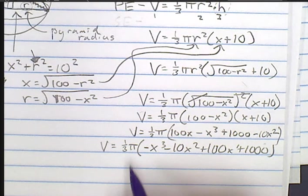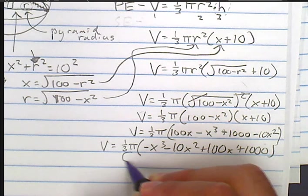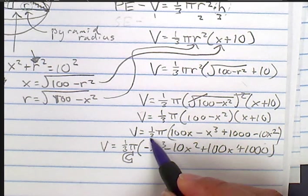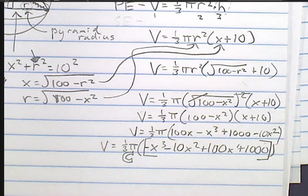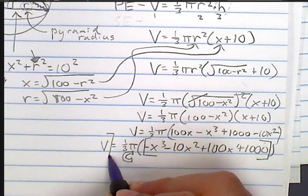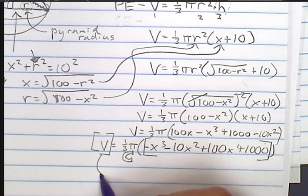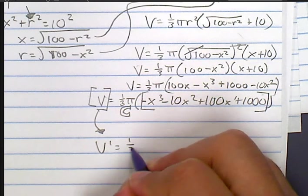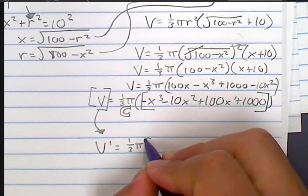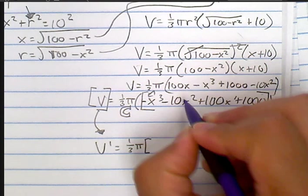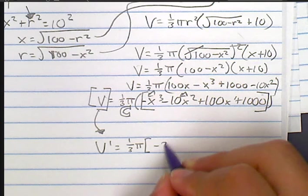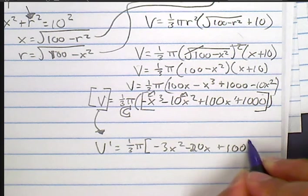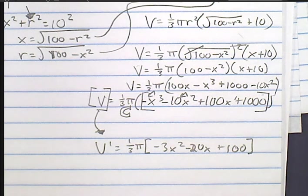Now I want to take a derivative. This is a multiplying constant, so I don't care. It's going to benefit me to just take the derivative of the inside. The derivative of v is v prime equals one-third pi. Power rules, power rules, power rules. Negative 3x squared minus 20x plus 100.